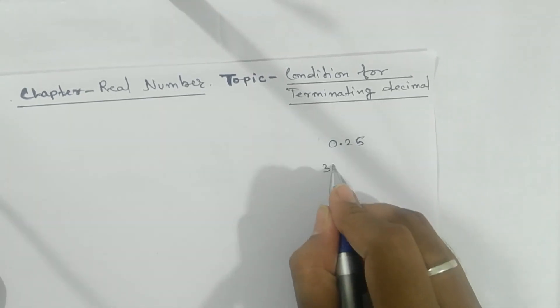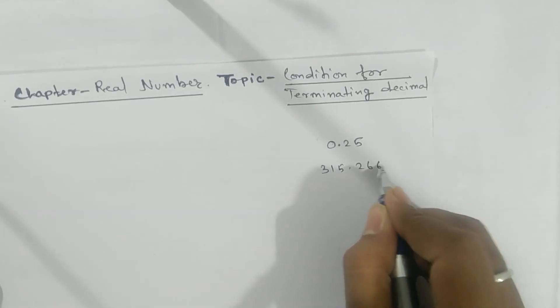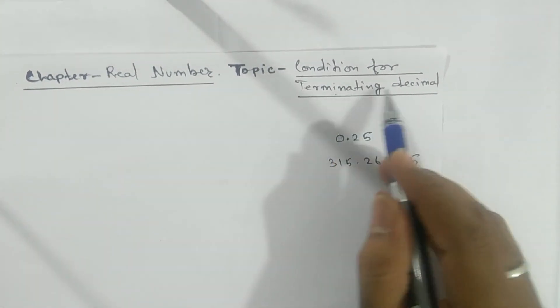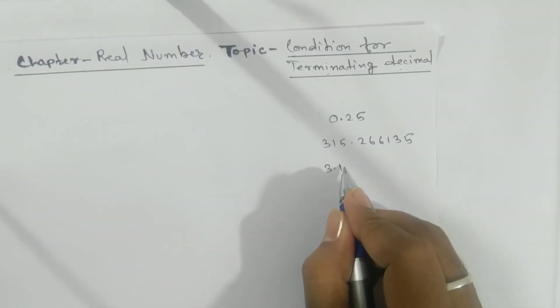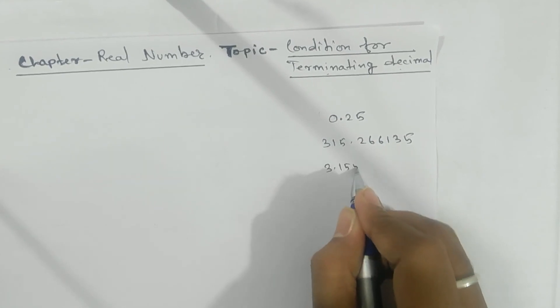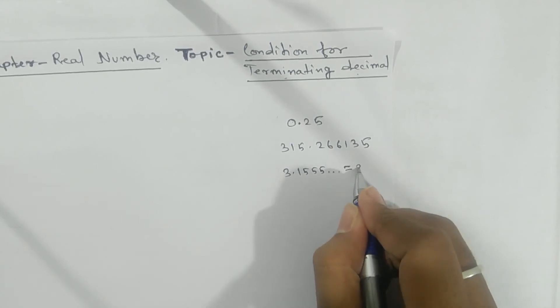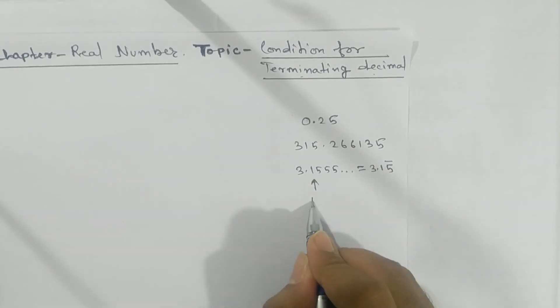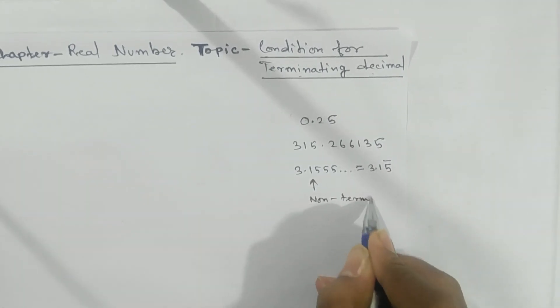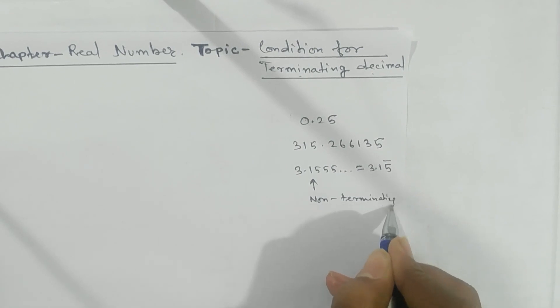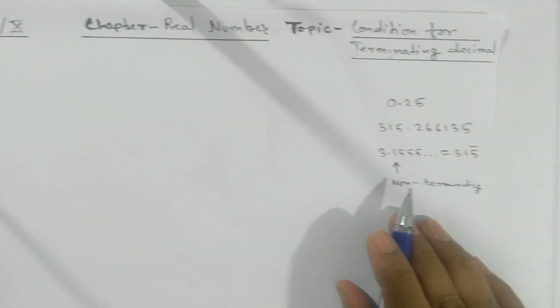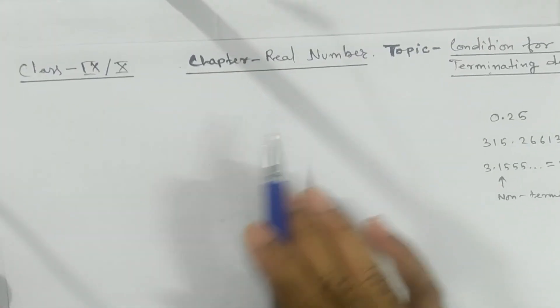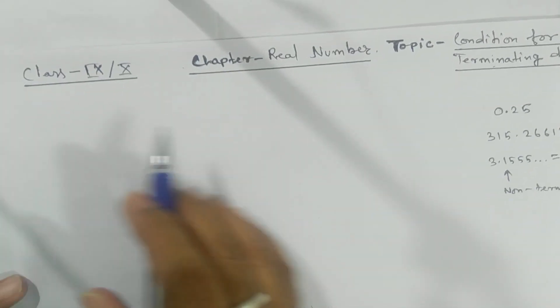For example, 315.626613 is also a terminating decimal. If I take 3.15555... or write it as 3.1̄5̄, then this is non-terminating. But we are not going to discuss non-terminating decimals here — our topic is terminating decimals.